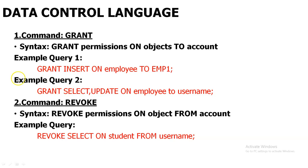See query 2: 'grant select, update on employee to username'. Here, this user will be allowed to access the employee table with operations select and update — they can view data in the table and update records, but they cannot insert a new record or delete a record from the table. So this is the grant command.